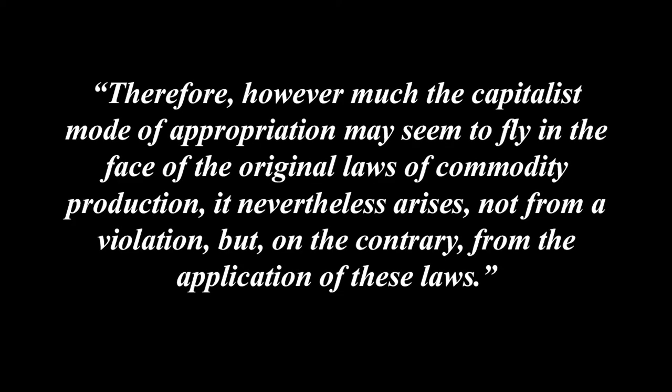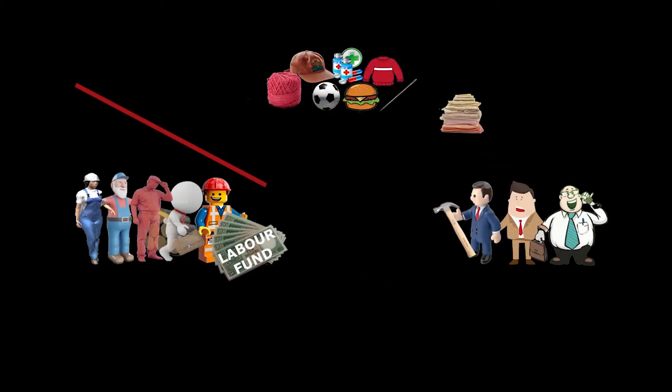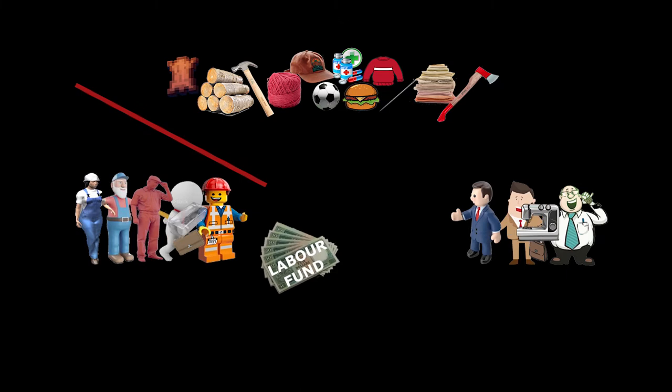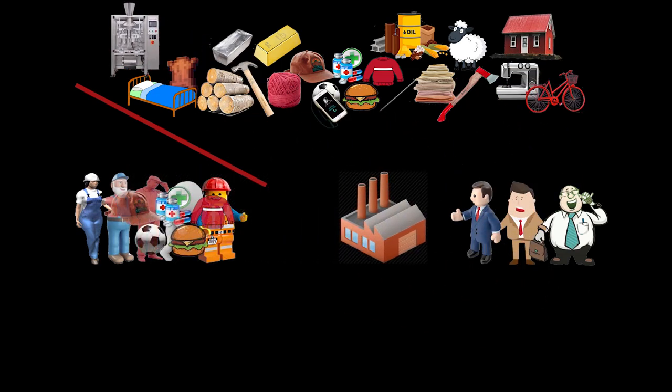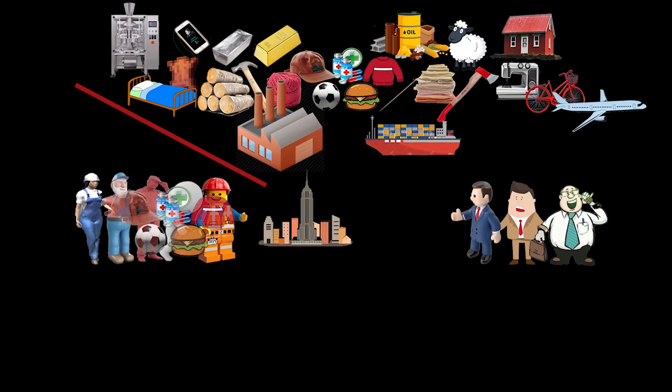Therefore, however much the capitalist mode of appropriation may seem to fly in the face of the original laws of commodity production, it nevertheless arises not from a violation, but on the contrary, from the application of these laws. This also means that the massive wealth that labour power creates, that becomes separated and alienated from them via the wage form — which we discussed in the previous chapter — also faces the workers on an ever-increasing scale. We can see that a continual growing mass of wealth, separated from the workers who produce it, is a natural consequence of capitalism, and not some sort of mistake. It's a function of the system itself — a feature, not a bug.